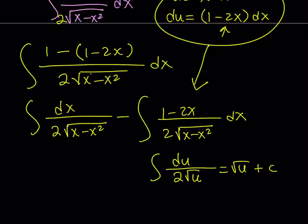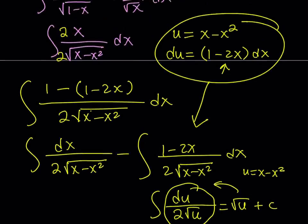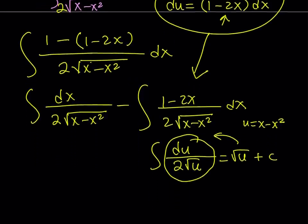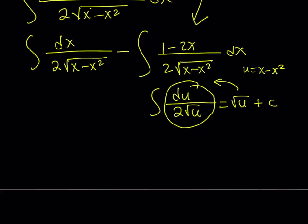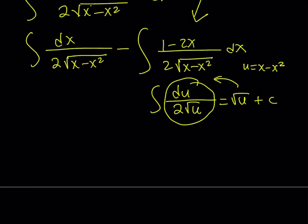u is equal to x minus x squared, without the radical. The second one then becomes what? It's going to be square root of x minus x squared plus c. The constant is something that we can take care of at the end, but if you want to write it now that's fine too. This takes care of the second piece. Let's go ahead and focus on the other one.